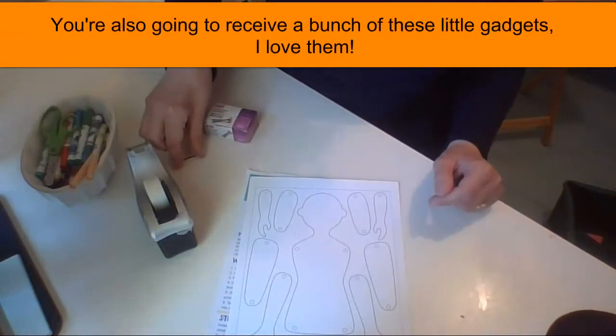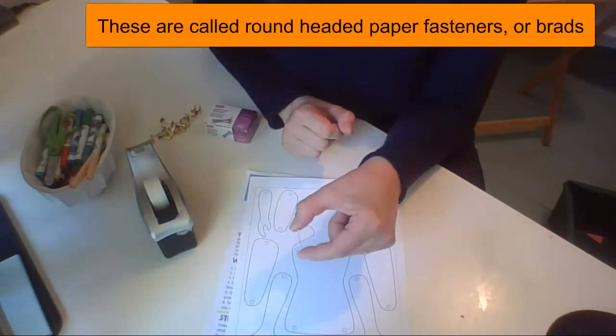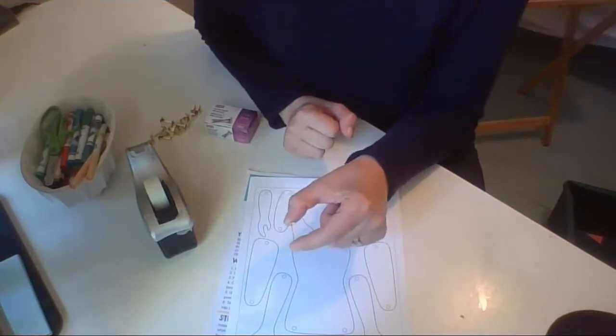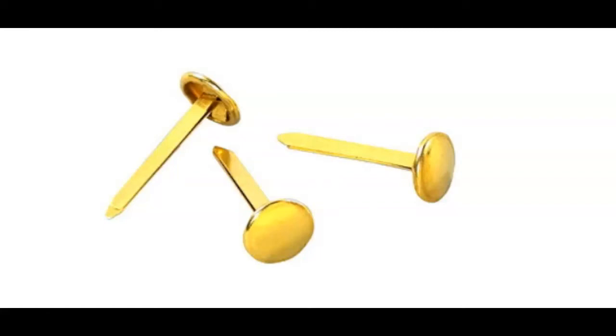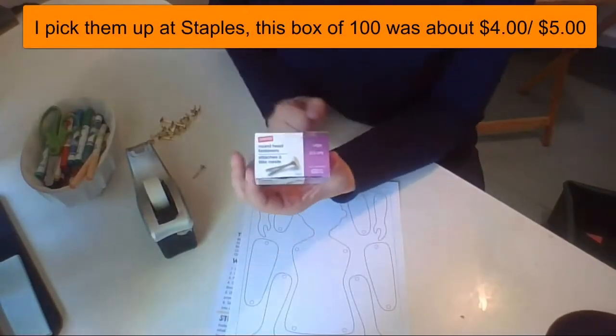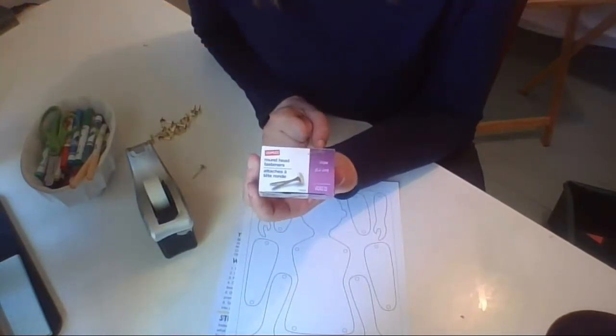You're also going to receive a bunch of these little gadgets. I love these. These are called round headed paper fasteners. They're also called brads. I picked them up at Staples. This box comes with about a hundred of them for about four or five dollars.